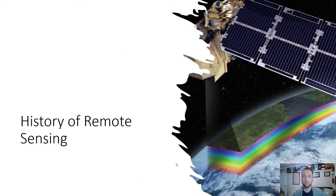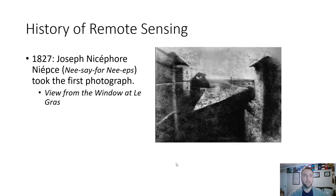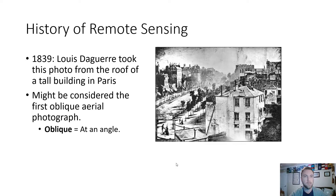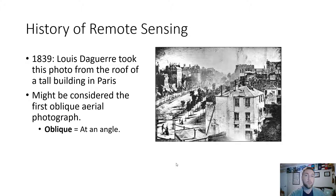The history of remote sensing: the first photograph was actually taken in France by a gentleman named Joseph Nicéphore Niépce. He took a photo out of a window, and that's the first existing photo we have. In 1839, Louis Daguerre took a photo from the roof of a tall building in Paris — you might consider that one of the first oblique aerial images ever taken. Oblique means at an angle, contrasted with an orthogonal or ortho photo, which is taken at a right angle to the ground — like the imagery you see in Google Earth or Google Maps.